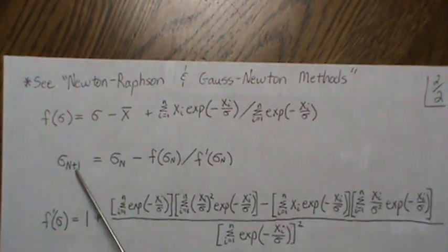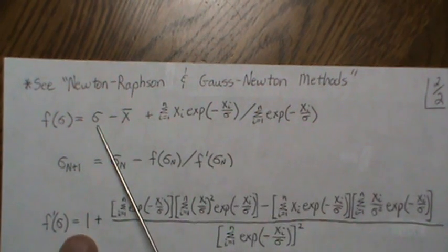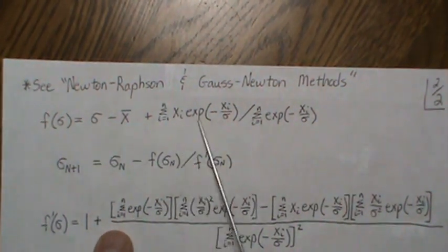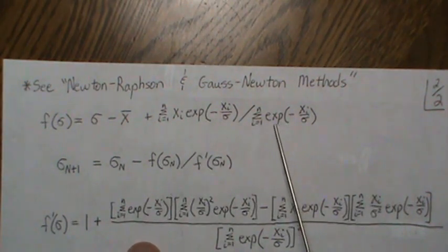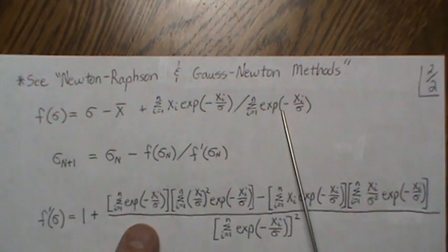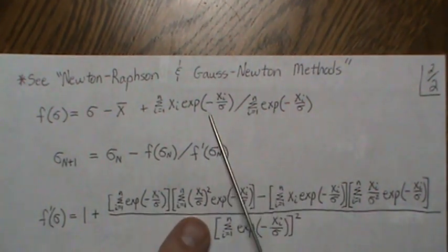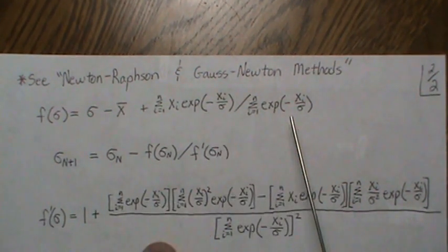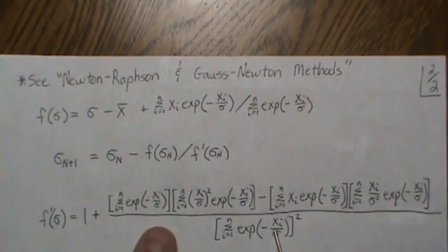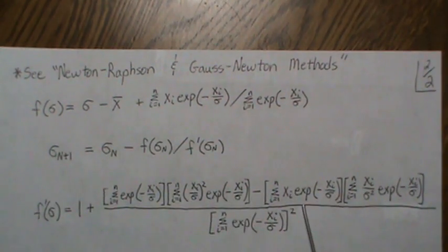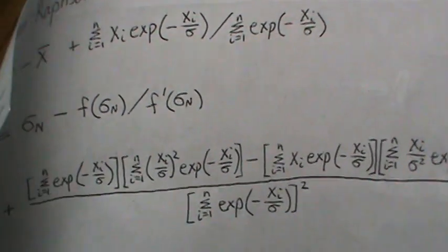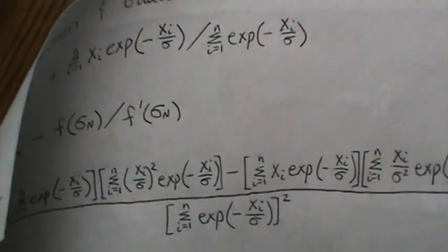Taking the derivative with respect to σ: the first term gives 1, the constant term gives 0, and for the remaining fraction we apply the quotient rule — numerator times derivative of denominator minus derivative of numerator times denominator, all over denominator squared. The result is a somewhat involved expression that you should be able to read off the screen and copy.